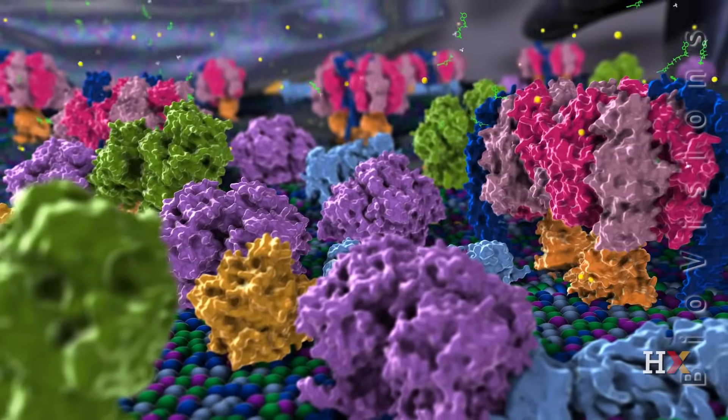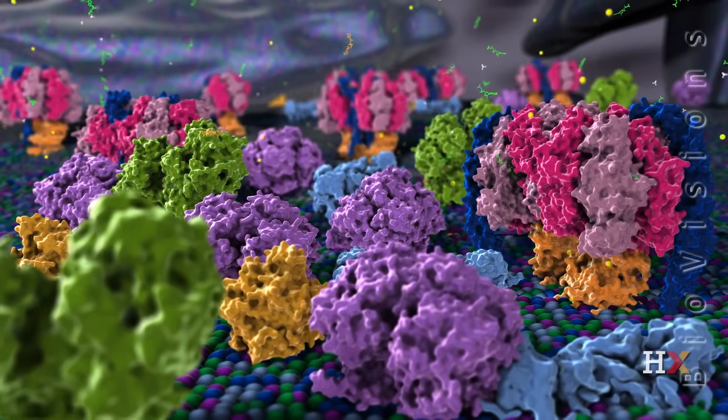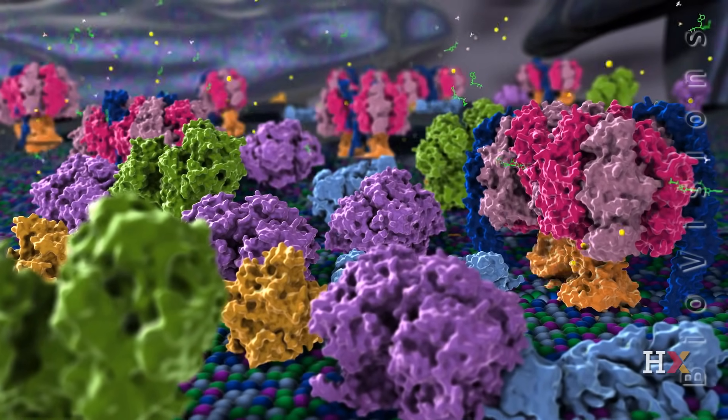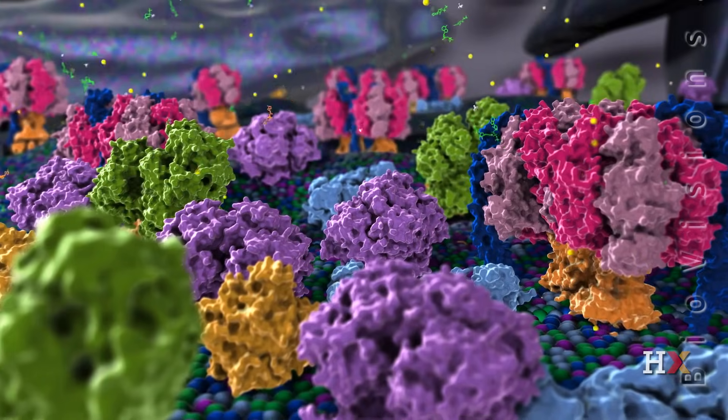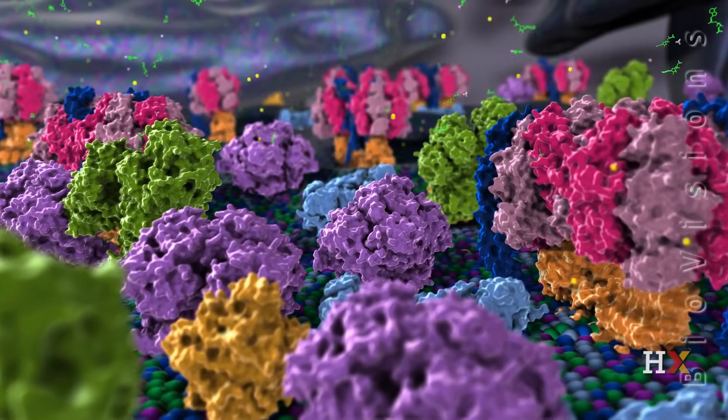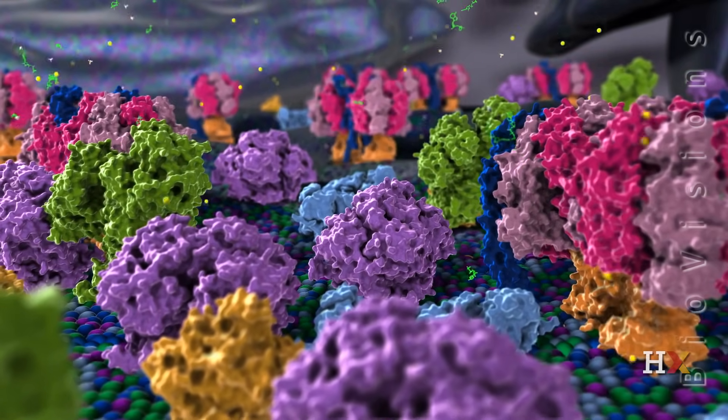In this animation, we have explored each protein complex in isolation, but in reality they are very densely packed. Together, they effectively make the entire surface of the inner mitochondrial membrane a giant cellular power plant.